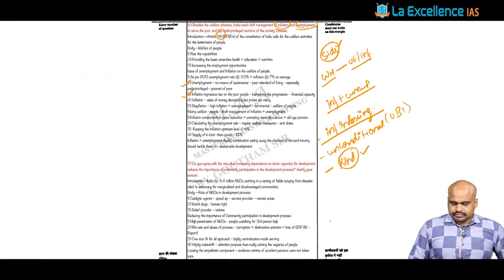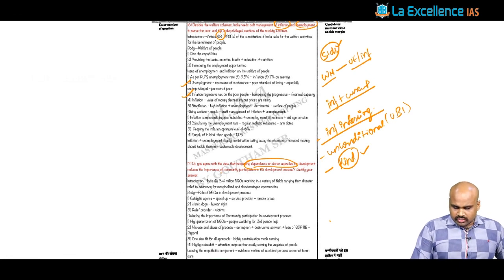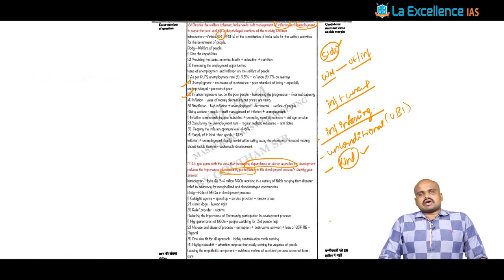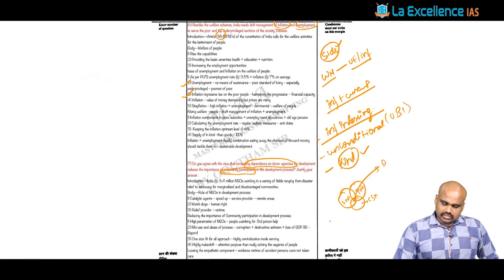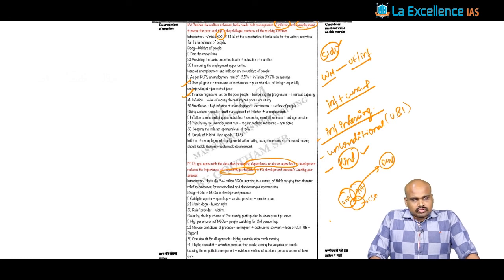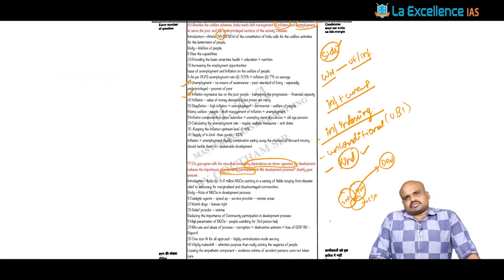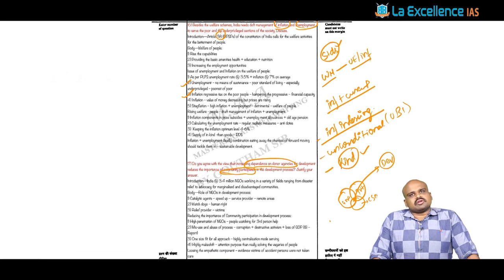Now looking at question 17: do you agree with the view that increasing dependence on donor agencies for development reduces the importance of community participation in the development process? Development involves the participation of the government, the private sector, and civil society organizations. The real meaning of development is taking everybody along — not just leveraging developmental benefits upon the population but making them part of the developmental process.